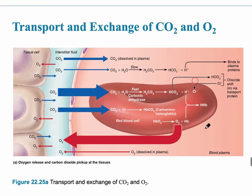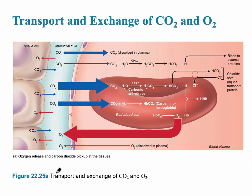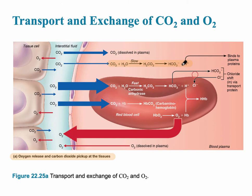In graphical format, we can see the transport and exchange of carbon dioxide and oxygen. This shows oxygen release and carbon dioxide pickup at the tissues — specifically internal respiration. The same chemical reaction occurs in the red blood cell: carbon dioxide combines with water to produce carbonic acid, which breaks into bicarbonate ions and hydrogen ions, but it is faster due to the enzyme carbonic anhydrase.